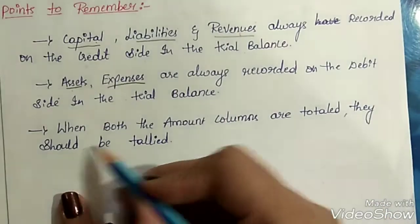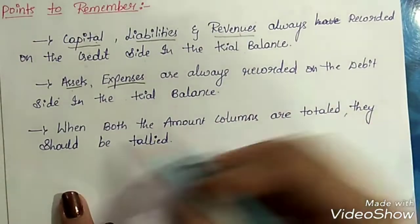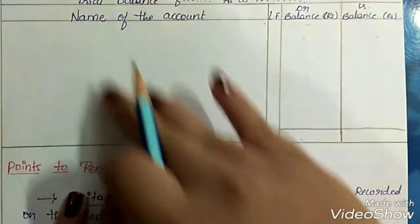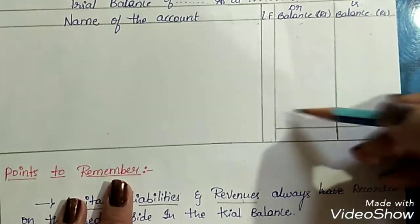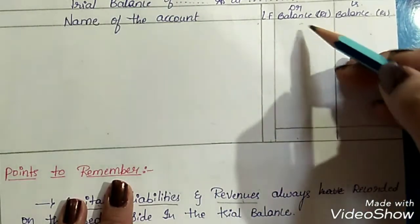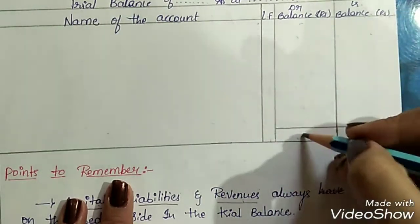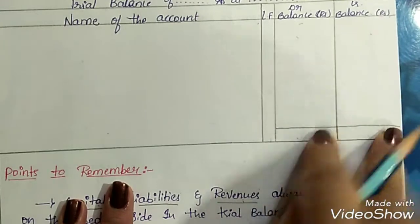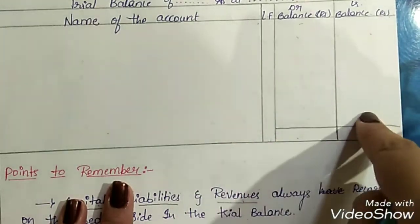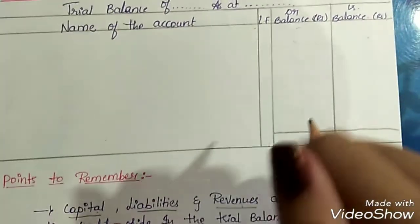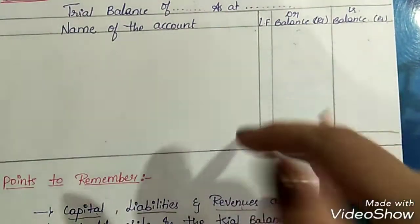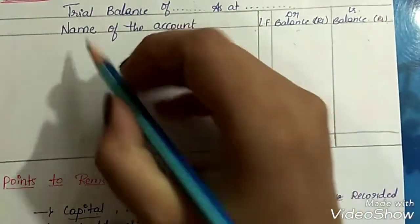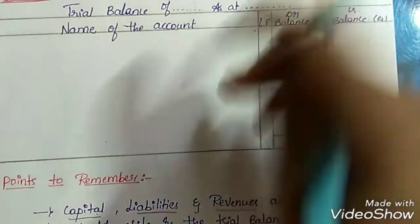When both the amount columns are totaled, they should be tallied. After recording all the transactions, the next step is totaling — when you total up the amounts, both should match. There should be no difference in the trial balance. If there is a difference in the amount, it means your trial balance is not correct and there are certain mistakes.